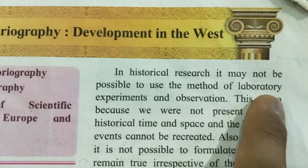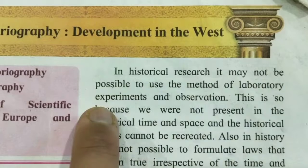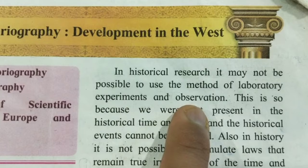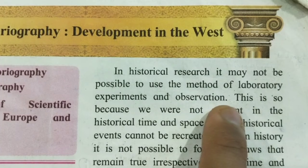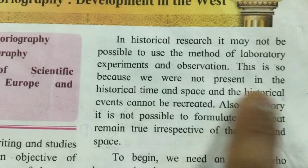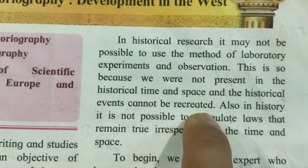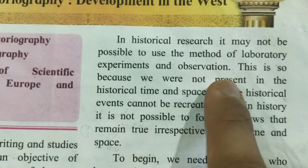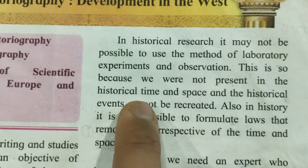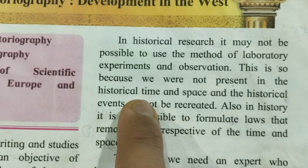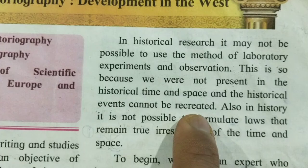Now comparing history to science — historical research cannot be done in a lab. This is because we were not present in the historical time and space, and historical events cannot be recreated. We cannot do experiment or observation in history the way we do in science, because we were not present when those events occurred. For example, when Mahabharat happened, we were not present.